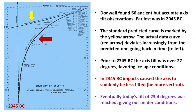Today, cross-checks confirm that these ancient measurements are both reliable and accurate. Dodwell found 66 ancient yet accurate axis tilt observations. The earliest was in 2045 BC from Egypt. The observation curve shows that prior to 2345 BC, the axis tilt was over 27 degrees. In 2345 BC, measurements show that a strong change in the axis tilt occurred. Eventually, by 1850, today's tilt of 23.4 degrees was reached, giving our milder conditions. But the initial change would have been fast and somewhat dramatic.